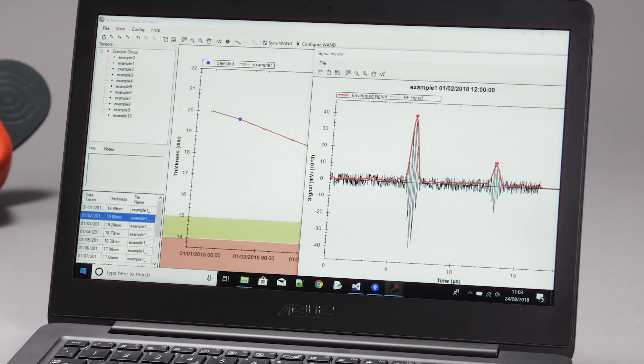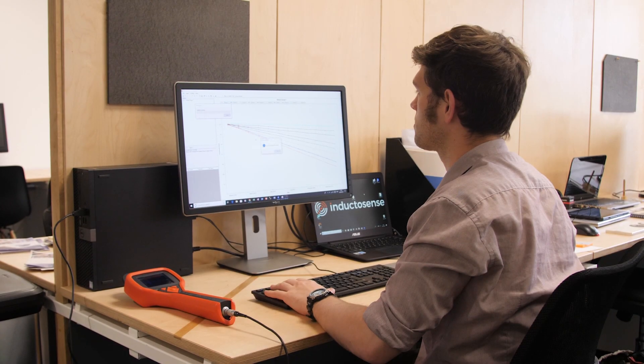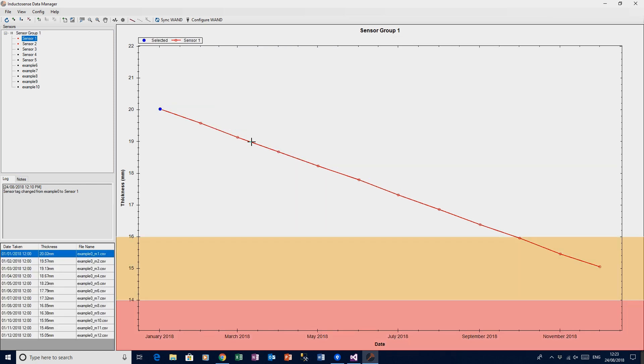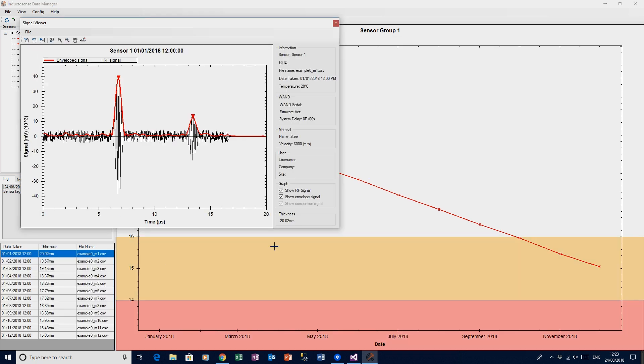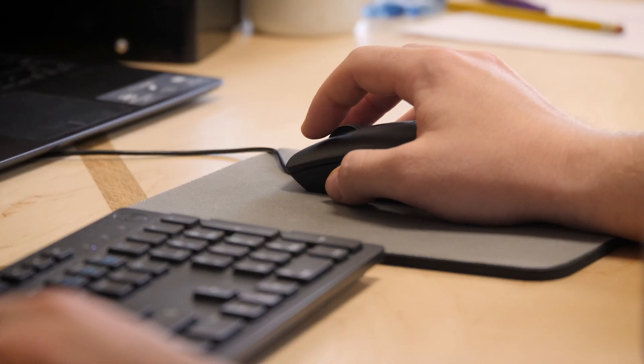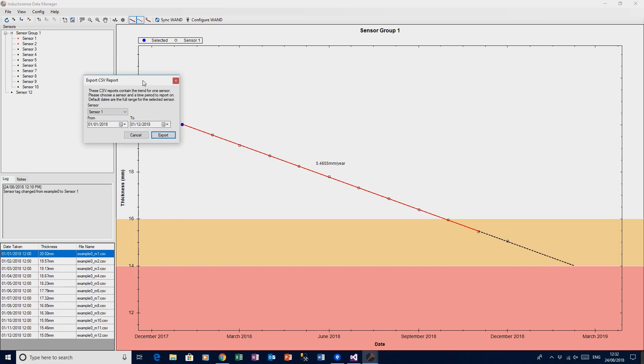The InductorSense data management software is a powerful tool equipped with sophisticated signal processing. It is used to analyse and manage the data from the RFID tagged sensors and also to configure the WAN data collector. Trending of corrosion can be undertaken from single sensors or groups of sensors. Reports can also be generated.